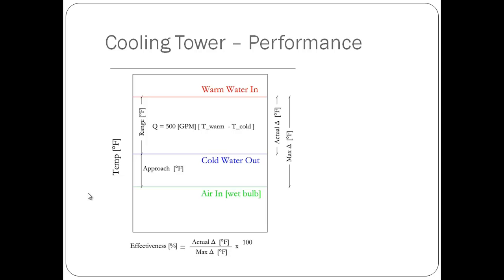The range of the cooling tower is the difference between the entering and exiting temperature of the cooling tower water. The approach, or approach to wet bulb, is the temperature difference between the water out and the wet bulb temperature of the air. The approach is important because it describes the level of performance of the cooling tower.